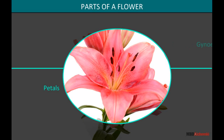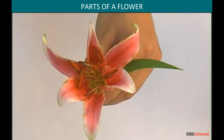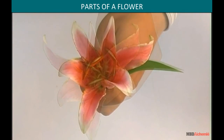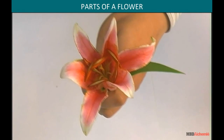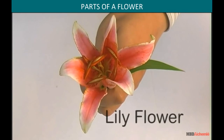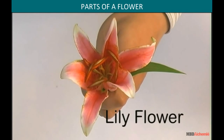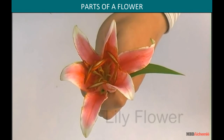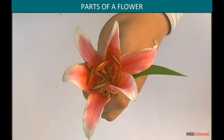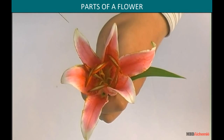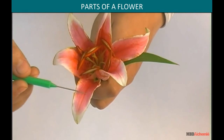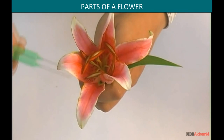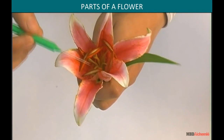Let's see how dissection of a flower is carried out. The reasons for taking a lily flower for dissection is because the flower is large and showy, conspicuous, petals are big and well differentiated, with a prominent stigma and anthers.